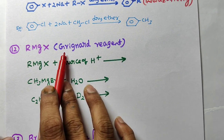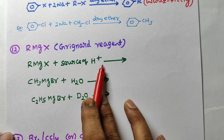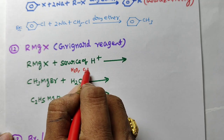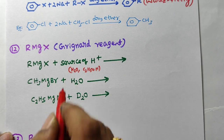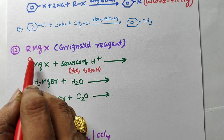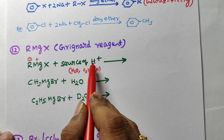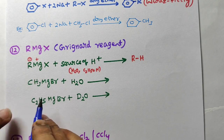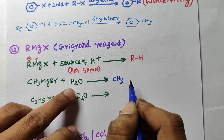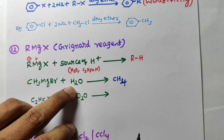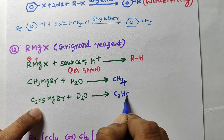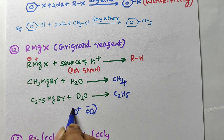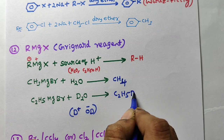Next: Grignard reagent (RMgX) reacts with a source of H⁺ — such as H2O, ethyl alcohol, or ammonia. Here RMgX splits into R⁻ and Mg²⁺; R⁻ attacks H⁺ to form an alkane. For example, CH3MgCl + H2O → CH4, methane. Another example: C2H5MgBr reacts with D2O (heavy water). D2O splits into D⁺ and OD⁻; D⁺ attacks, so you get C2H5D.